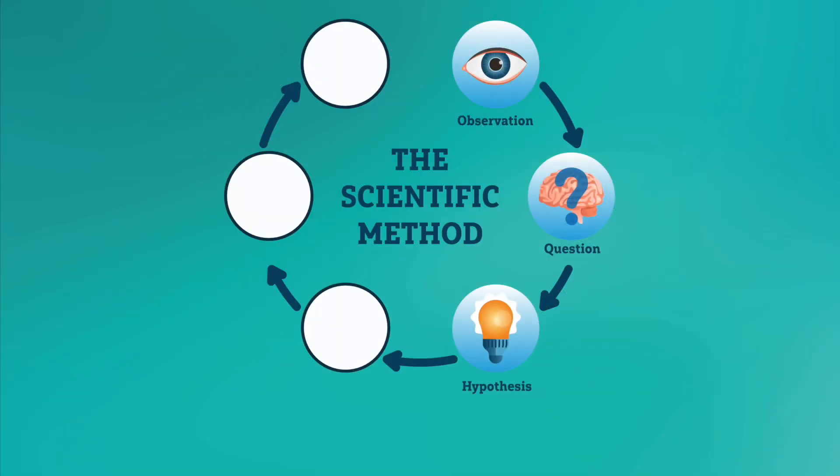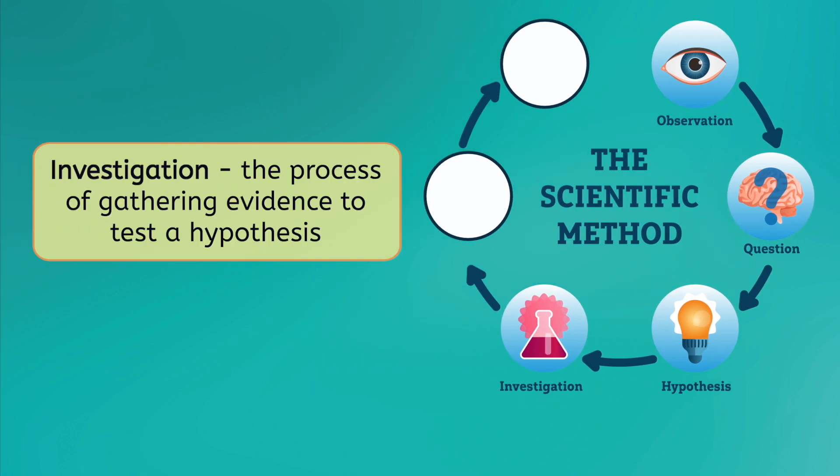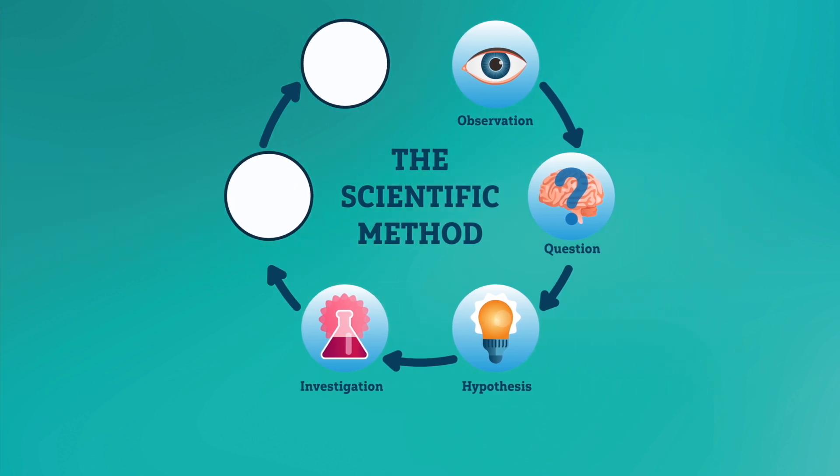We are now ready for the fourth step, performing an investigation, where we gather evidence to test our hypothesis. If you've learned about the scientific method before, you might be thinking, Don't you mean an experiment? However, an experiment is only one type of scientific investigation. We're gonna go over all the different types of scientific investigations in our next video, but this investigation we're doing right now is very simple. We're just gonna check those paws for stain-causing stuff, and then compare whatever we find to the stains on the carpet. Alright?